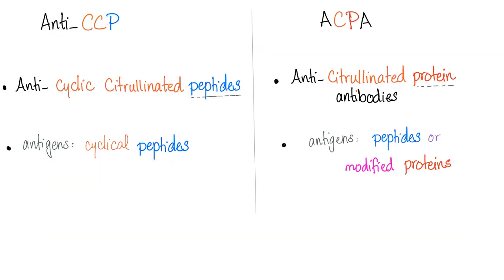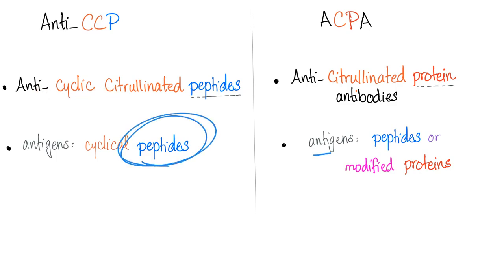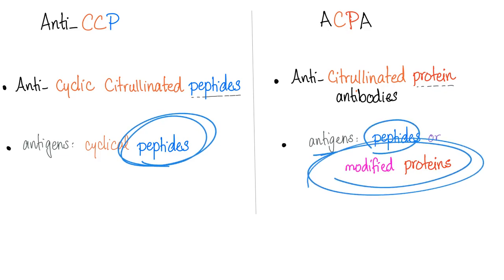Anti-CCP is not the same thing as ACPA. Anti-CCP stands for anti-cyclic citrullinated peptide — antibodies against cyclical peptides. ACPA stands for anti-citrullinated protein antibodies — antibodies against peptides or modified proteins more broadly.